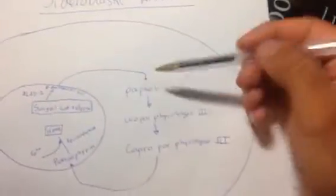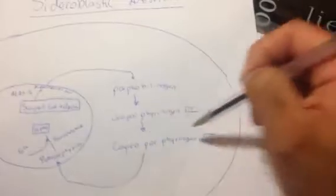This product, gamma-aminolevulinic acid that's inside of the mitochondria right now, is going to come out of the mitochondria. We're going to go through a few more reactions catalyzed by other enzymes. We get porphobilinogen, then it's converted to uroporphyrinogen 3, then that becomes coproporphyrinogen 3.